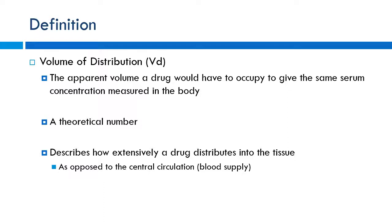Remember bioavailability — the percentage of the administered drug that actually makes it into the systemic circulation. Something given IV has 100% bioavailability. Given that, we can determine how well the drug distributes from the bloodstream into the tissues. Some drugs do not partition out much; others do quite a bit. High volume of distribution typically means high distribution to tissues. Low VD means most of the drug stays within the bloodstream.